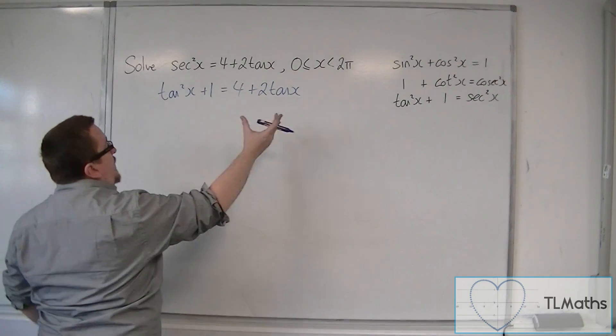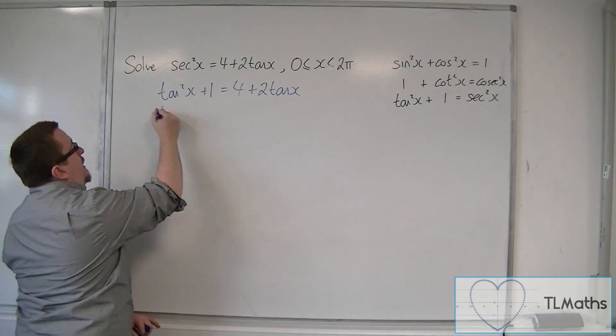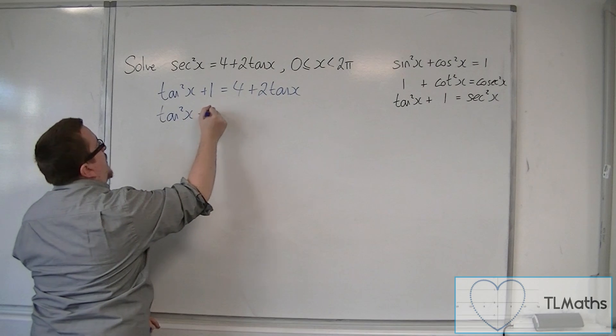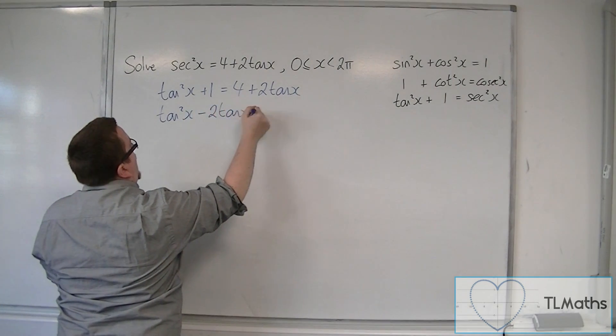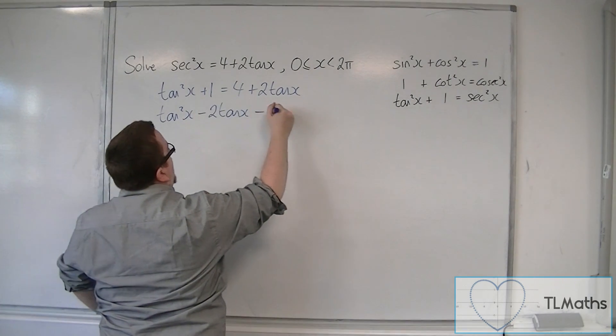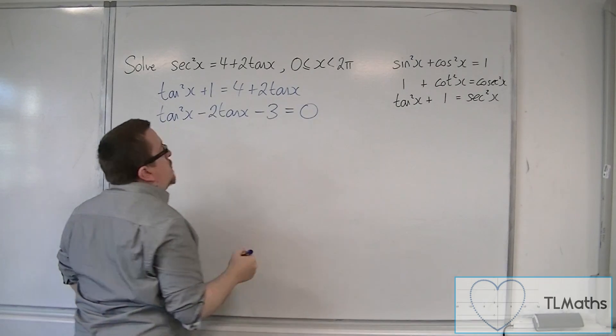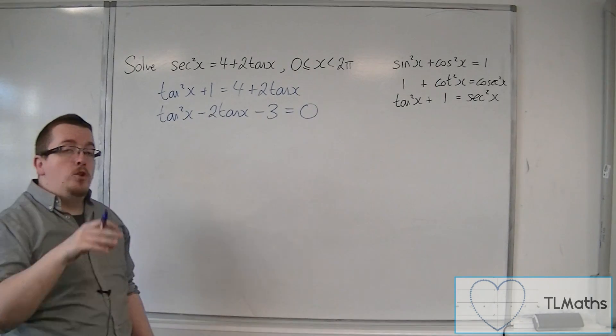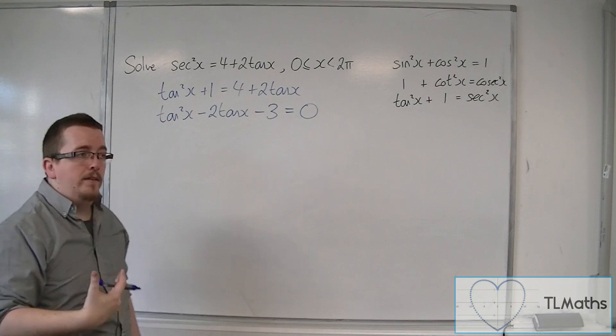We can then move everything onto the left-hand side of the equation. So we have tan squared x, take away 2 tan x, and then take 4 from both sides, we get minus 3, is equal to 0. So we now have a quadratic equation in tan in order to solve.